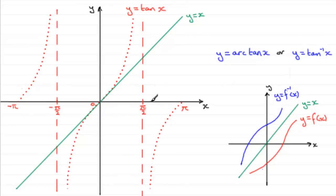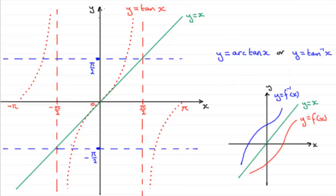The key points are going to be pi upon 2 and minus pi upon 2. Pi upon 2 gets reflected up to here and minus pi upon 2 gets reflected down to here. So these asymptotes are going to be crucial in our graph. You can see how the asymptotes are reflected in y equals x — horizontal lines now at pi upon 2 and minus pi upon 2.